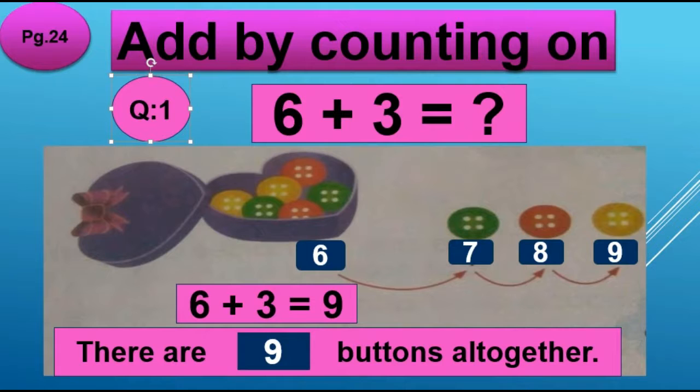Now green button. After 6 what will come? 7. So we will write under green button 7. What comes next to 7? Very good. 8. So under red button we will write 8. What comes next to 8? Very good. 9. So under yellow button we will write 9.